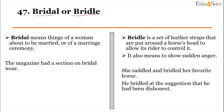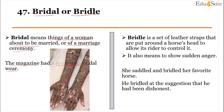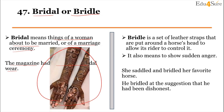Next word pair is 'bridal' (B-R-I-D-A-L) and 'bridle' (B-R-I-D-L-E). Bridal means things of a woman about to be married or of a marriage ceremony. For example: 'The magazine had a section on bridal wear.' Bridle is a set of leather straps put around a horse's head to allow its rider to control it; it also means to show sudden anger. For example: 'She saddled and bridled her favorite horse,' and 'He bridled at the suggestion that he had been dishonest,' meaning he suddenly showed anger at the suggestion that he was lying.